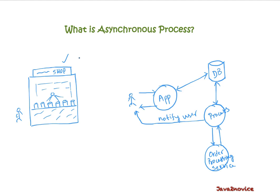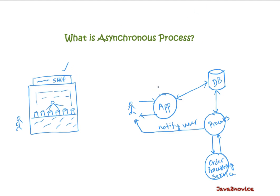Now let's apply the same logic to the application. You made a call on this application. The application validates your input, stores it into the database, and sends an acknowledgement immediately. Within 2 seconds you get back your acknowledgement. In the background, a process will pick up open requests from the database and make a request with the Order Processing Service. On successful processing, it notifies the user through different means — it can be email or a message in any other form.